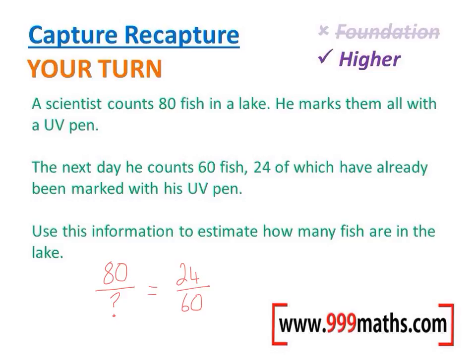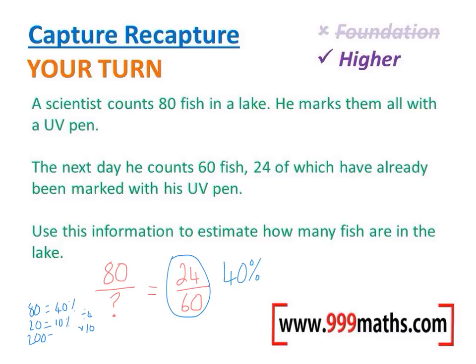Let's work it out as a percentage first. 24 out of 60: 10% of 60 is 6, 20% is 12, 30% is 18, so 24 is equal to 40%. This fraction is worth 40%, so we need to make the fraction on the left also equal to 40%. If 80 out of something equals 40%, dividing by 4 gives us 20 equals 10%. Multiplying that by 10, we get 200 as the 100% value. That's how many fish there are in total — 200.